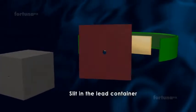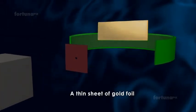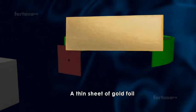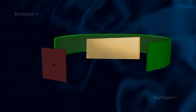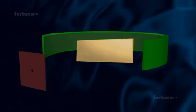The radiation was focused into a narrow beam through a slit in the lead container. A thin sheet of gold foil was placed in front of the beam. A circular screen was coated with zinc sulfide to render it fluorescent. The screen was placed in front of the gold foil.